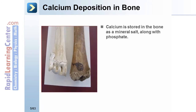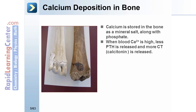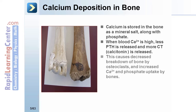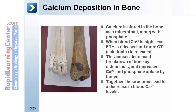Calcium is stored in bones as a salt along with phosphate. When blood calcium is high, less PTH is released and more calcitonin (CT) is released. This causes decreased breakdown of bone by osteoclasts and increased calcium ion and phosphate uptake by bones. Together, these actions lead to a decrease in blood calcium levels.